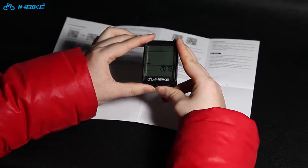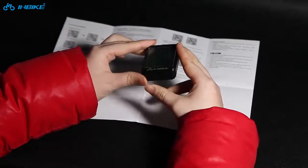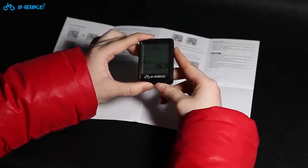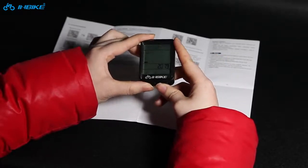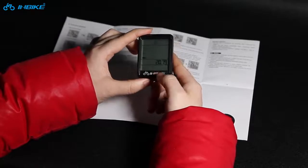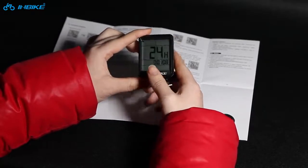Then press the left key to go to the next parameter. This is the rear circumference setting.